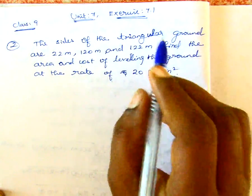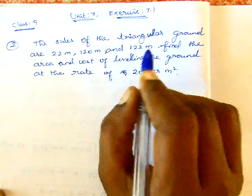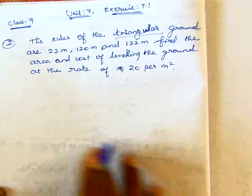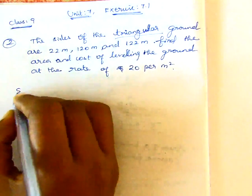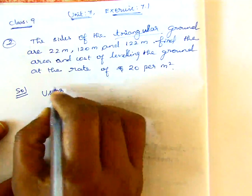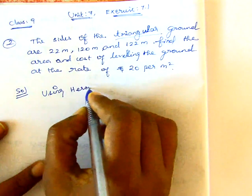So, we can find the ground area. The ground shape is triangular shape. So, we can use the sides to get the area using Heron's formula.